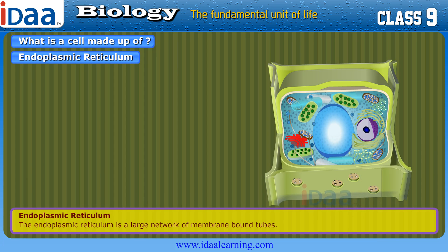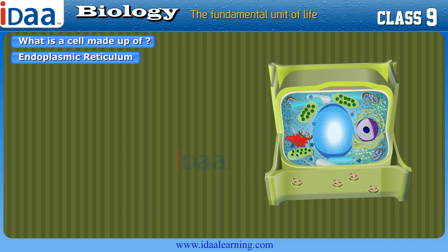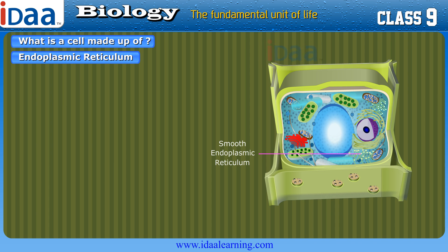The endoplasmic reticulum is a large network of membrane-bound tubes. Types include rough and smooth endoplasmic reticulum. Rough endoplasmic reticulum has particles called ribosomes attached to its surface. Areas that do not have ribosomes on them are called smooth endoplasmic reticulum.